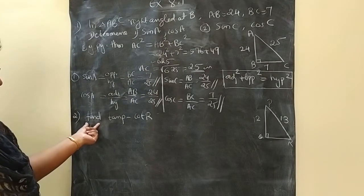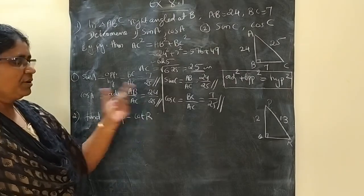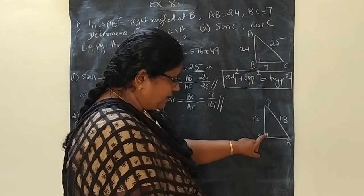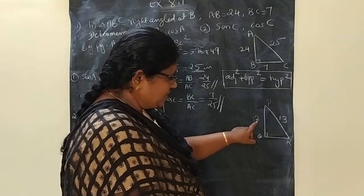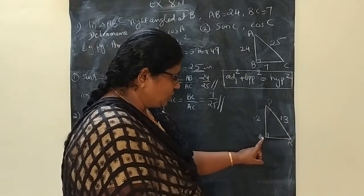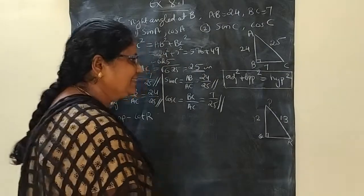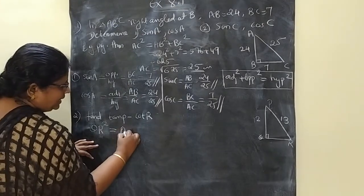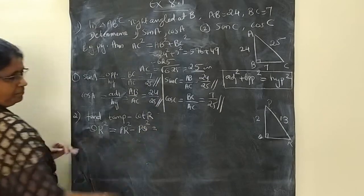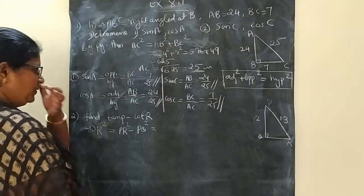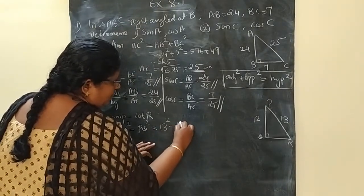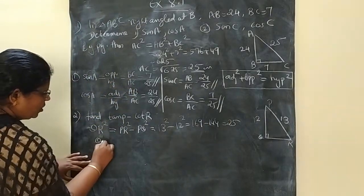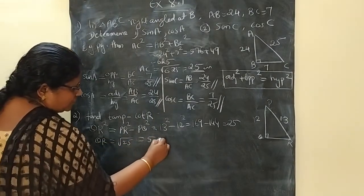Second question: find tan P minus cot R from the figure. The triangle is already given. In this triangle, a right angle is marked. The hypotenuse PR equals 13 and PQ equals 12 are given; we need to find QR. QR squared equals PR squared minus PQ squared equals 13 squared minus 12 squared equals 169 minus 144 equals 25. So QR equals root of 25, which is 5.